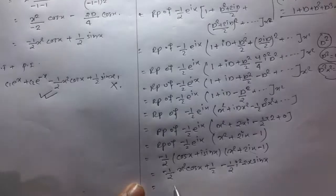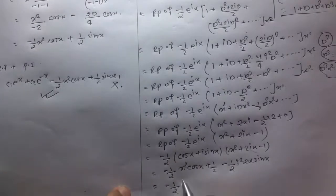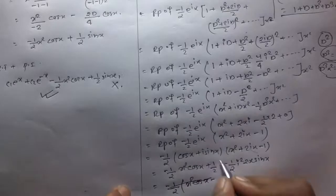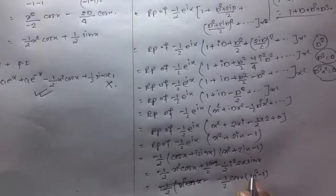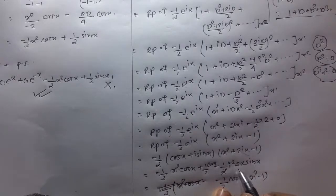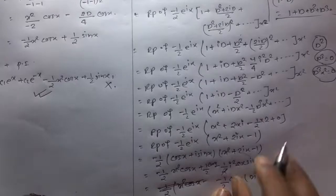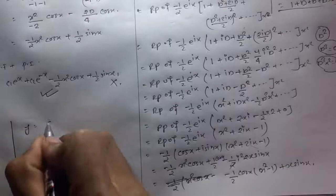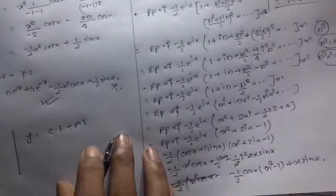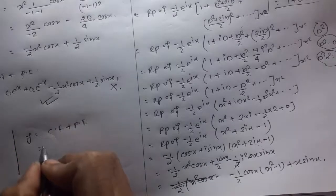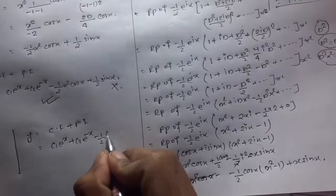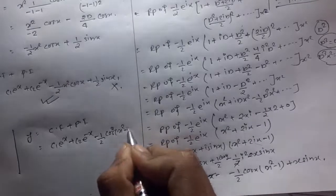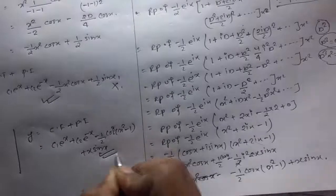Taking the real part — multiplying real by real and imaginary by imaginary (with i² = -1): real part = -1/2 · [x²cos(x) - 1·cos(x) + 2x·(-sin(x)·i²)] = -1/2 · cos(x) · (x² - 1) + x·sin(x). So the required general solution is y = c₁eˣ + c₂e⁻ˣ - 1/2·cos(x)·(x² - 1) + x·sin(x). This is the true answer.